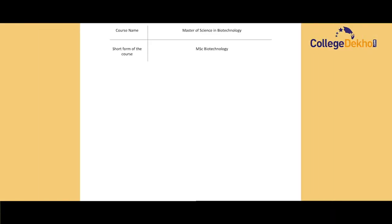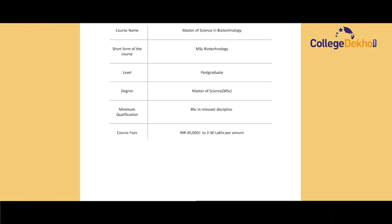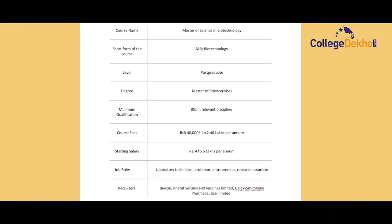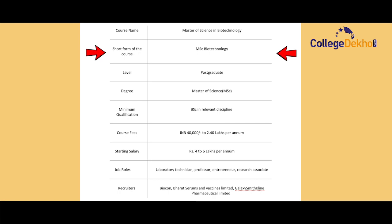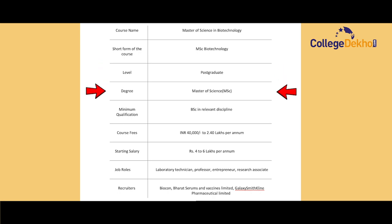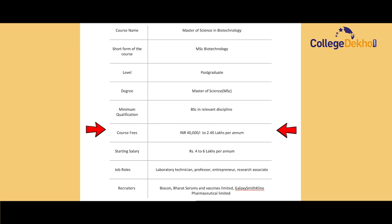The MSc Biotechnology syllabus is a mixture of both theoretical and practical sessions that help students learn the implementation of the course. Now let's check the highlights: Course name — Master of Science in Biotechnology (MSc Biotechnology). Level — postgraduate degree, Master of Science. Minimum qualification — BSc in a relevant discipline.